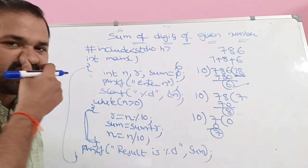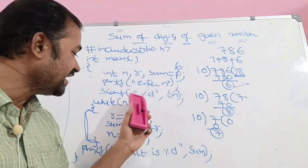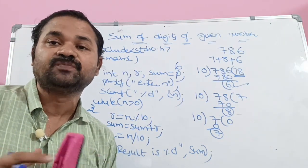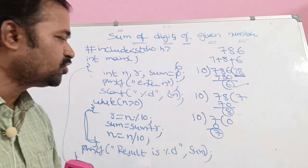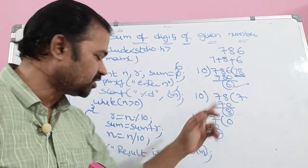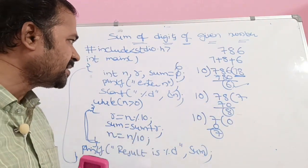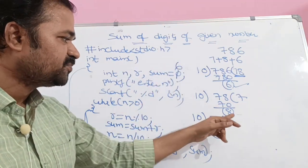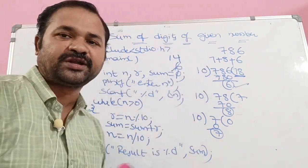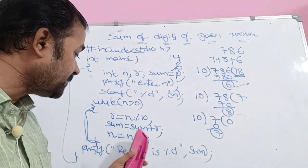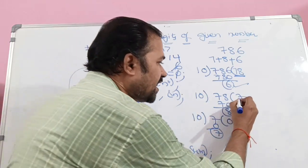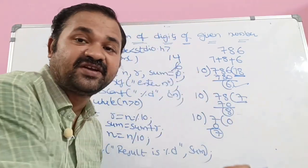Control goes back to the while loop. Condition: n = 78, which is greater than 0, condition is true. r = n modulo 10: 78 modulo 10 gives 8. r = 8. sum = sum + r: previous sum was 6, plus 8 gives 14, so sum = 14. Next, n = n / 10: 78 divided by 10 gives quotient 7, so n = 7.